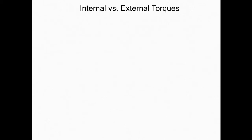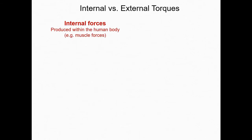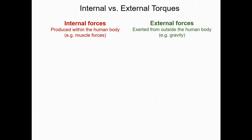Now that we have a basic idea of what a torque is and how it's defined, we can consider the difference between internal and external torques. Internal torques are those torques that arise from internal forces — an internal force is produced within the human body, such as the force produced by a muscle. External torques are those torques that arise from external forces — an external force is exerted from the outside of the body, such as forces due to gravity or the resistance imposed by a therapist.